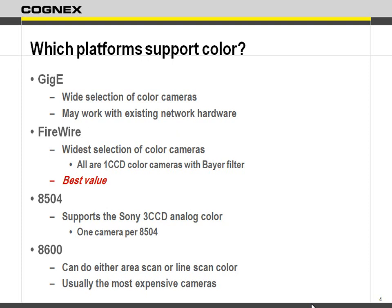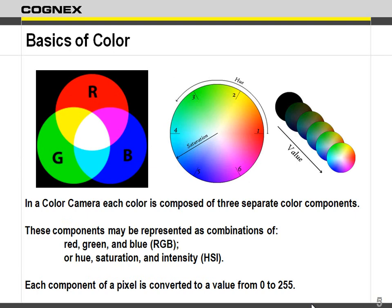Instead of having a grayscale band, it's a color band. For color line scan, it may use a Bayer filter approach — perhaps a couple of pixels averaged down to be one pixel. So we have color represented as RGB and HSI — those are the two ways you can represent color.